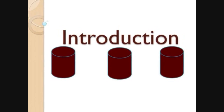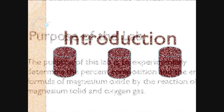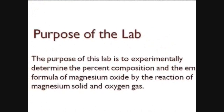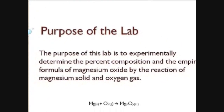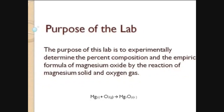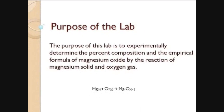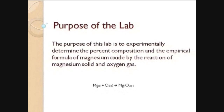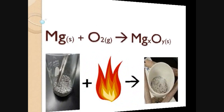I am going to try my best to make you guys understand every concept of it. To start with, what is the purpose of the lab? The purpose of this lab is to experiment to determine the percent composition and the empirical formula of magnesium oxide by the reaction of magnesium solid and oxygen gas. So basically what we are doing is we are taking magnesium and combining it with oxygen O2 which will give us MgO.